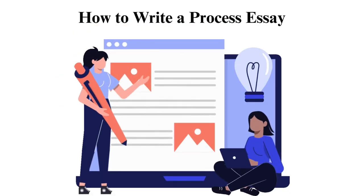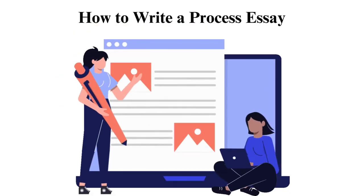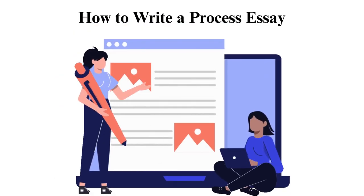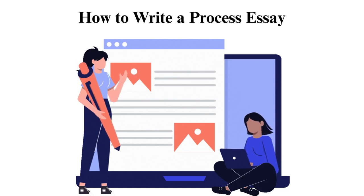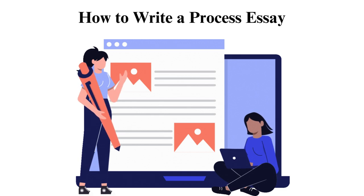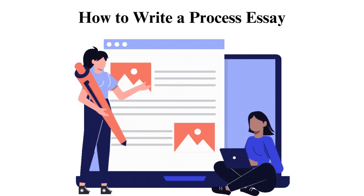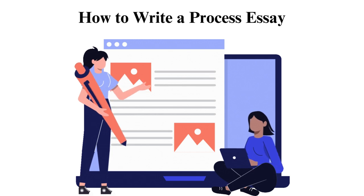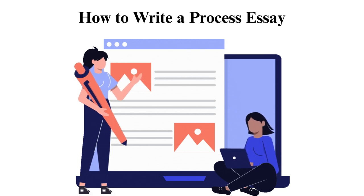What is a process essay? A process essay is a piece of text that explains how something is done, mainly how to achieve a certain goal or procedure. There are two main types of process essays: informational and directional. The main difference between the two is that the directional type has a result, while the informational does not.